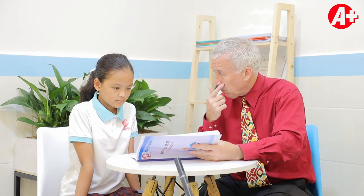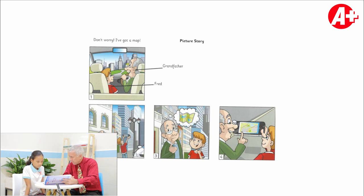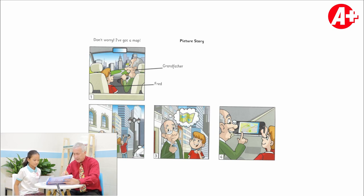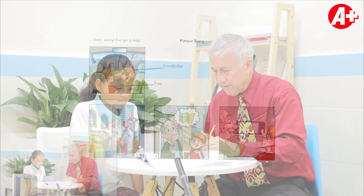I'm going to turn the page now, where we have a small picture story called Don't Worry. So here, can you tell me what you think is happening in these pictures? Grandpa and Fred are going to the town. They take a lot of pictures of the tall building and they got lost. Grandfather didn't have a map, so Fred took his phone out and opened the map application. Very good, yes Jolie, that's perfect. He's got a map and he saves the day.